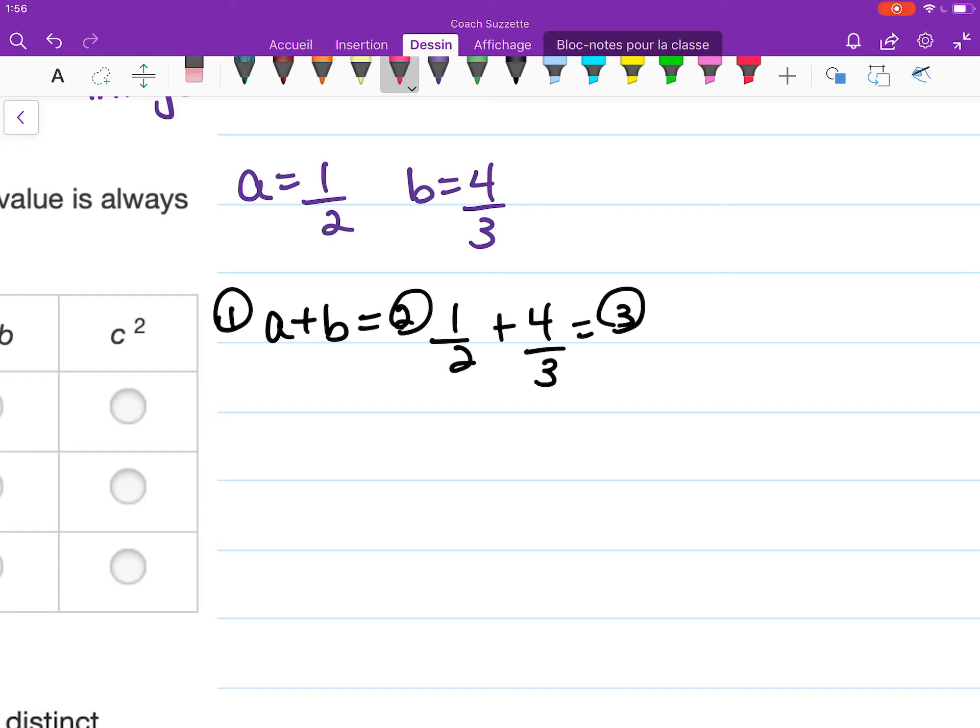We need to find the least common multiple. That would be 6, times 3 here, times 3 here, times 2 here, times 2 here.